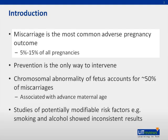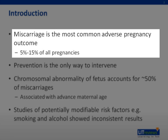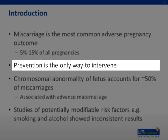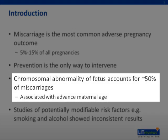Introduction. Miscarriage is the most common adverse pregnancy outcome, accounting for 5% to 15% of all pregnancies. Unfortunately, prevention is the only way we can intervene. Studies have shown that chromosomal abnormality of the fetus accounts for almost 50% of miscarriages, and it has been shown to be associated with advanced maternal age as well.